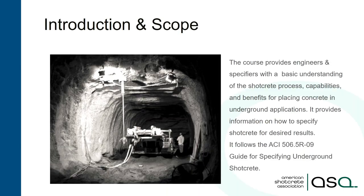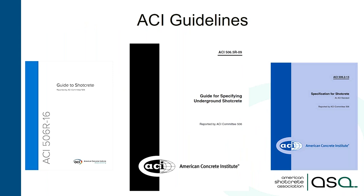The scope was to provide newcomers to Shotcrete in tunnel or mining applications with a door opener. The guide for specifying underground Shotcrete is the core document, and the idea was to provide a first step into it — to tear down the barrier so that you are not afraid or hesitant to use Shotcrete. In the center is the guide for specifying underground Shotcrete. On the left, you see ACI 546R16, the guide to Shotcrete, also a very good reference document.